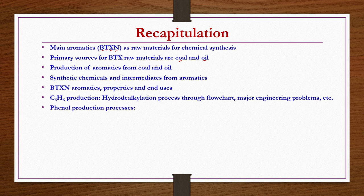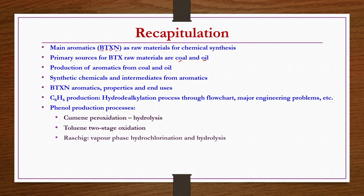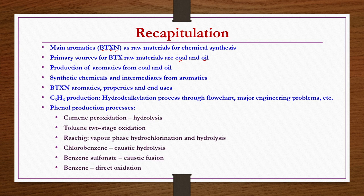Then we discussed properties and end uses of these aromatics, followed by benzene production by hydrodealkylation process. Then phenol production by six different processes was discussed. We have discussed phenol production by all of these methods.